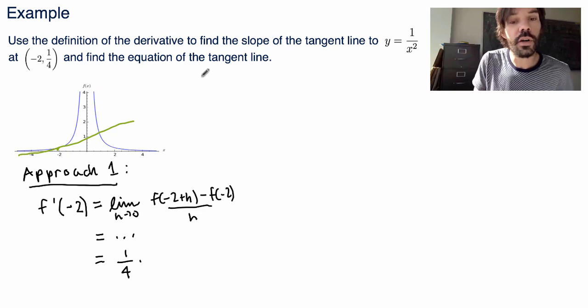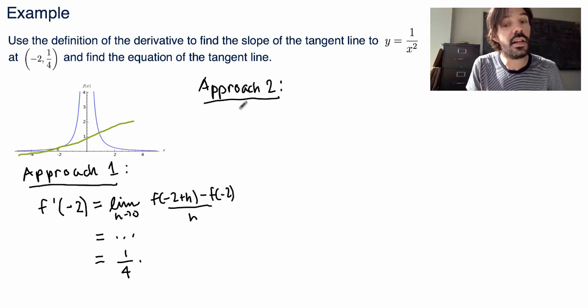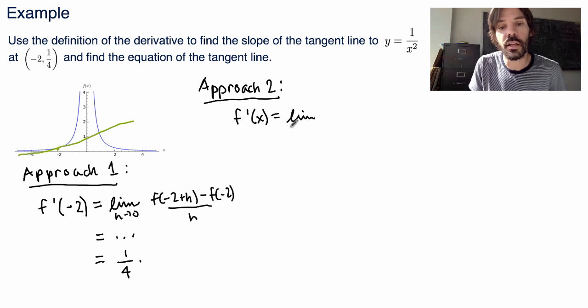But you can trust me that what you'll get is 1 fourth again. Ok, but I don't really want to do it this way. So what I'll do is something slightly different. So what I'll do, which I'll call approach 2, is to find first the derivative function f prime of x for arbitrary x, and then substitute x equals minus 2 afterwards. So let me calculate f prime of x, explicitly, from the definition of the derivative.